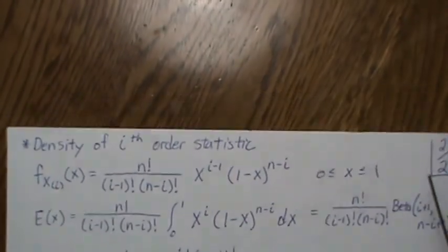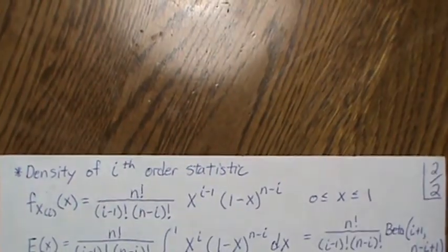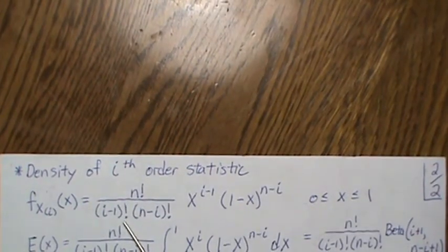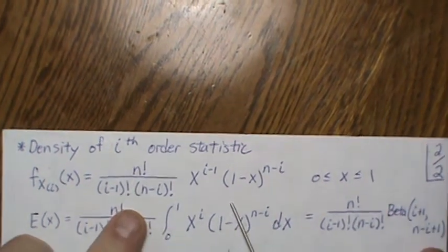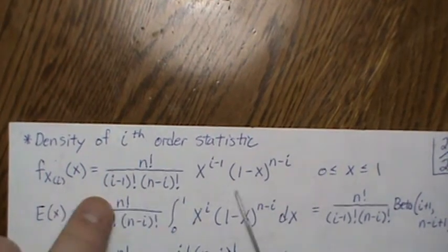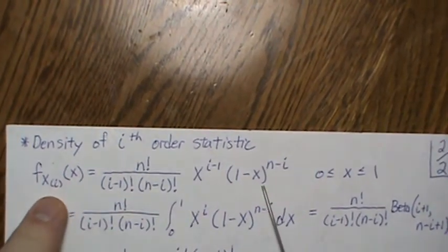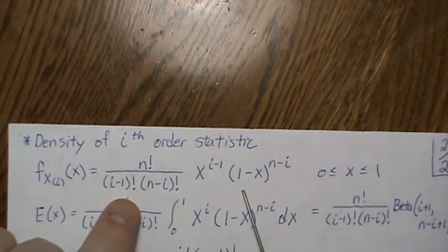So now let's look at the density of the ith order statistic, just one order statistic, and it is this. Now let's find the, and we're not going to derive the joint density for the ith order statistic, but it's this.